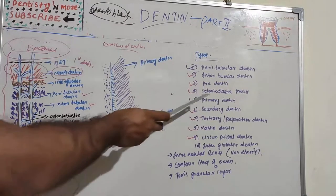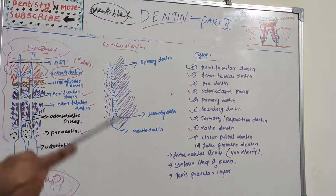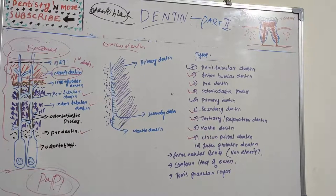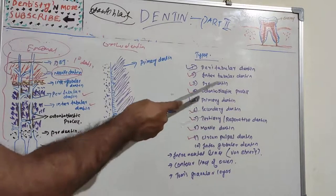Primary dentine is the dentine formed prior to eruption of the tooth. It is secreted at a relatively higher rate and constitutes the major part of dentine. Mantle dentine is the first formed dentine in the crown, underlying the dentino-enamel junction (DEJ), and is regular in structure. Dentinal tubules form an S-shape as a result of directional movement of odontoblasts. Circumpulpal dentine forms the remaining bulk of primary dentine, with fibers more closely packed and slightly higher mineral content than mantle dentine.